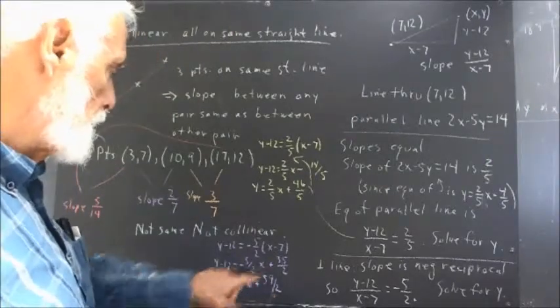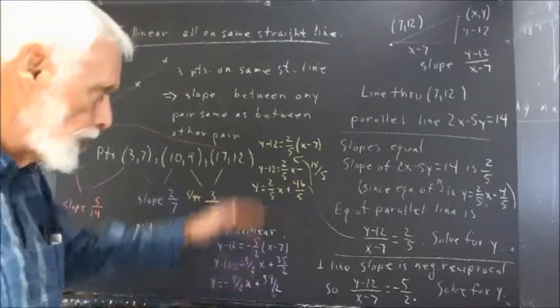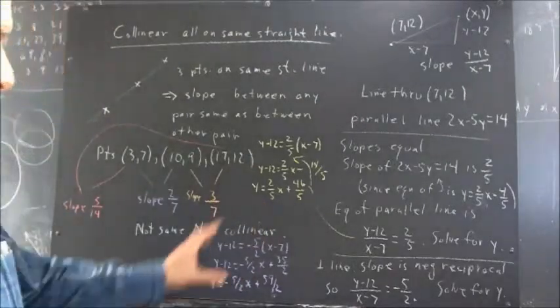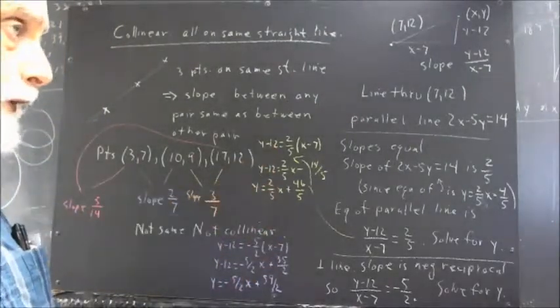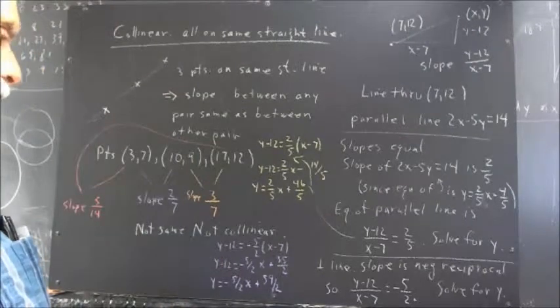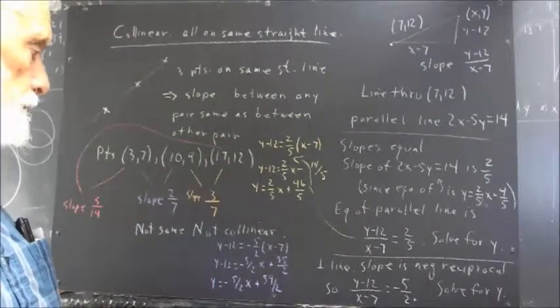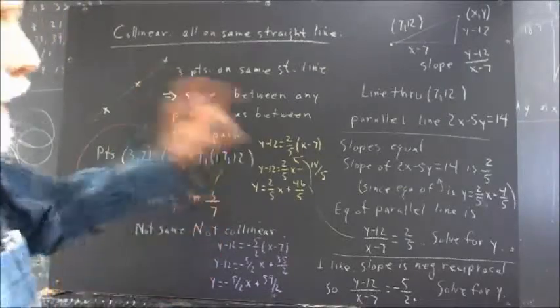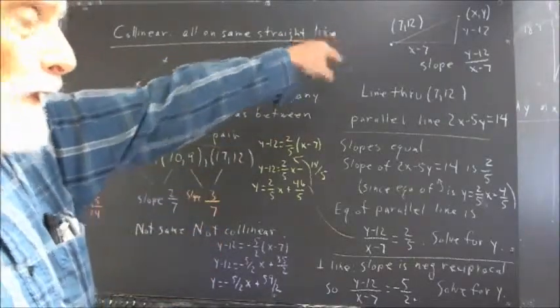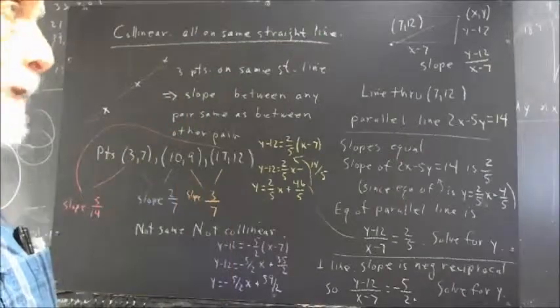And, of course, the negative five-halves x. So, there are the solutions. There are the slope-intercept forms of these equations. And if you were to graph them, you would see that it's very plausible that the graphs, that those points go through 7,12 and that the lines are indeed perpendicular.